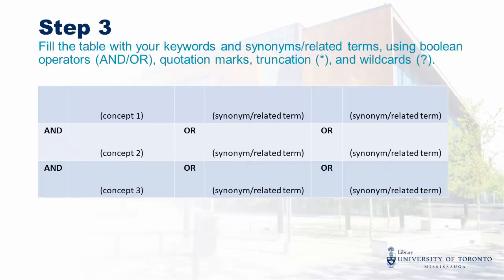Now that we've come up with our keywords and related terms, we can move to the last step of the worksheet, where we create a search string using Boolean operators — AND and OR — and special characters. Creating a search string this way gives you more control over your search than just typing in all your keywords. You'll get more of the results you want and fewer of the results you don't.